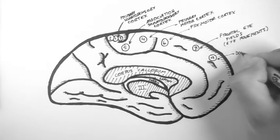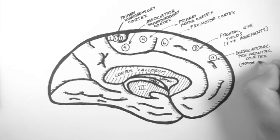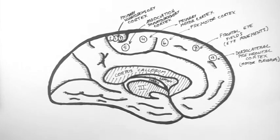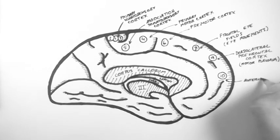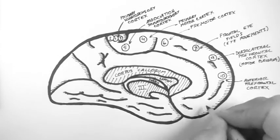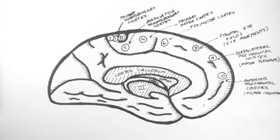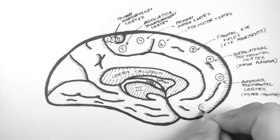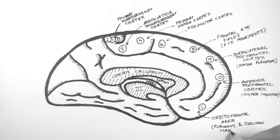Brodmann area 9 is the dorsolateral prefrontal cortex, which is important in motor planning. Brodmann area 10 lies anteriorly. And this is the anterior prefrontal cortex, which is thought to be a center of higher cognition. Inferiorly, we have the orbitofrontal area. This is Brodmann area 11. And this is thought to be involved in planning and decision making.